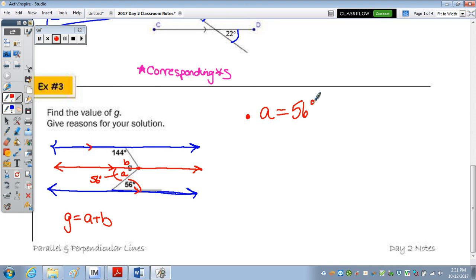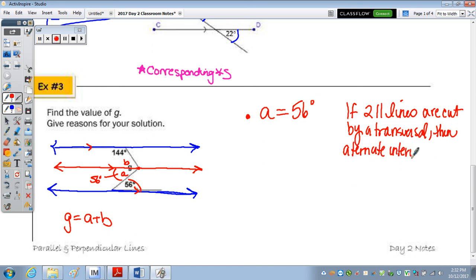What is the measure of angle A? 56. Here's your alternate interior. So this is 56 degrees. And your reasoning, so you have to explain or give reasons, would be if two parallel lines, because it told you they were parallel, are cut by a transversal, then alternate interior angles are congruent.